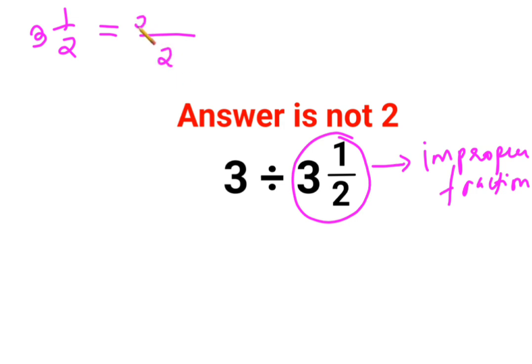But in the numerator, the denominator gets multiplied to the integer part, which is 3. Whatever answer you get, you add 1 to it, which is the numerator. So this becomes 7 upon 2. So the question has now changed to 3 divided by 7 upon 2.